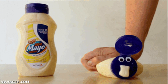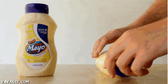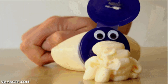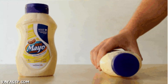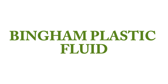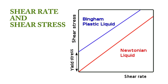This unique property makes Bingham plastics useful in various applications, such as modeling mud flow in drilling engineering and handling slurries. In terms of mathematical modeling, the Bingham plastic model describes the relationship between shear rate and shear stress applied to the fluid. It involves parameters such as yield stress and plastic viscosity to characterize its flow behavior accurately. The model allows for predicting how these fluids will behave under different conditions, making it valuable in engineering and fluid dynamics analyses.